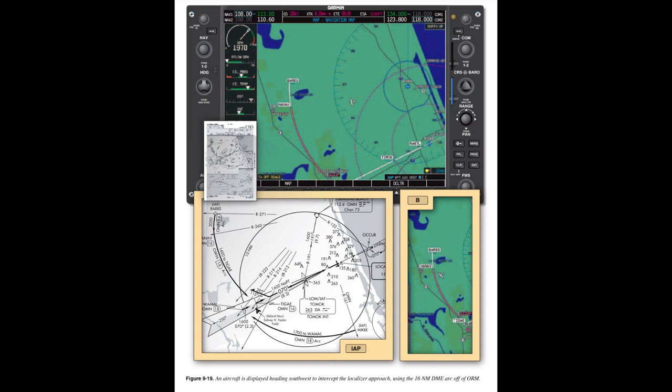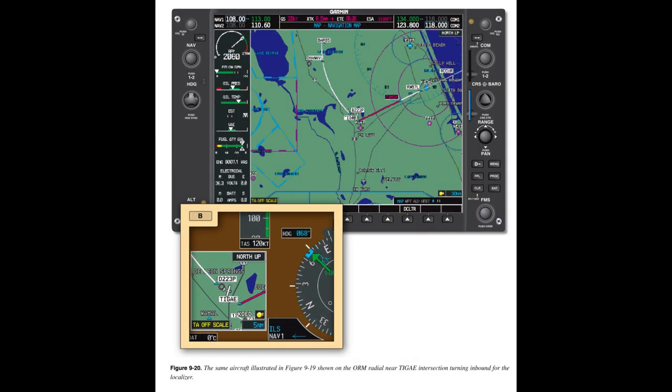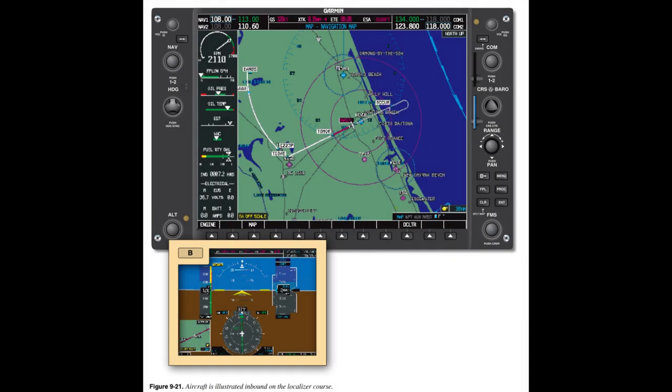The technique for intercepting a localizer from a DME arc is similar to intercepting a radial. At the depicted lead radial, a pilot having a single VOR/LOC receiver should set it to the localizer frequency. If the pilot has dual VOR/LOC receivers, one unit may be used to provide azimuth information and the other set to the localizer frequency. Since these lead radials provide 7 degrees of lead, a half-standard rate turn should be used until the LOC needle starts to move toward center.